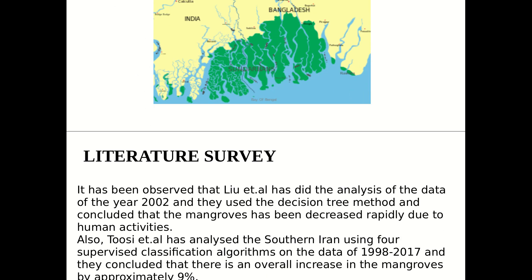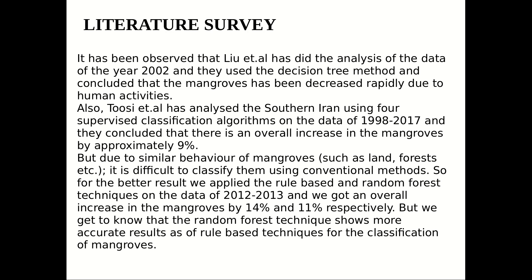Moving to the next slide — Literature Survey. It has been observed and analysed that by using the decision tree method, we conclude that mangroves have been decreased rapidly due to human activities. However, we found that random forest techniques show more accurate results compared to rule-based techniques for the classification of mangroves.